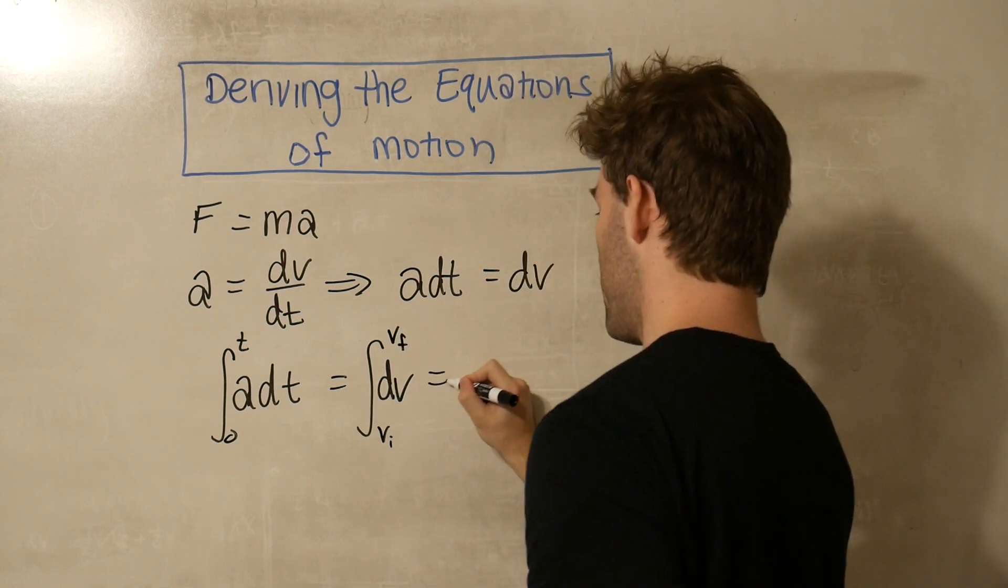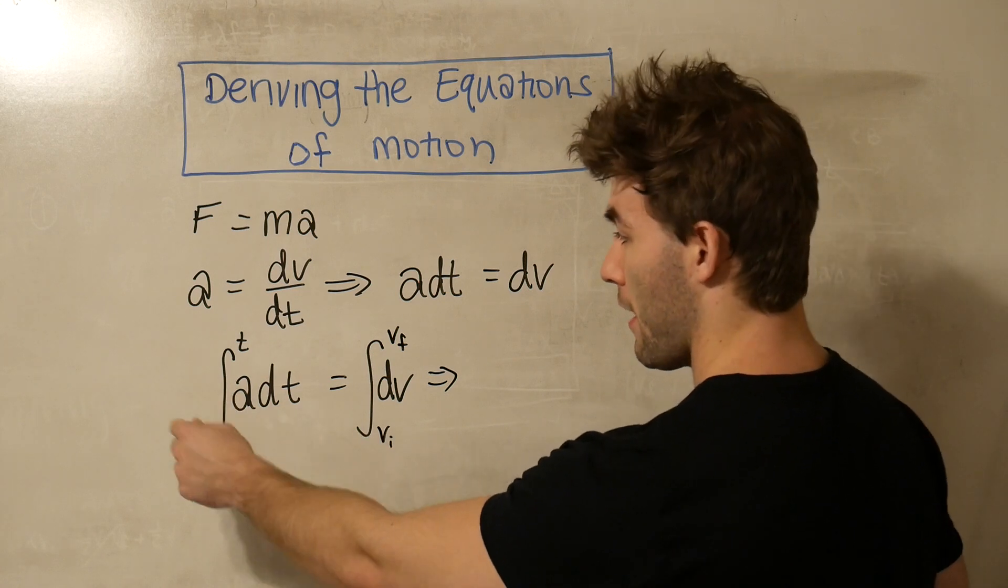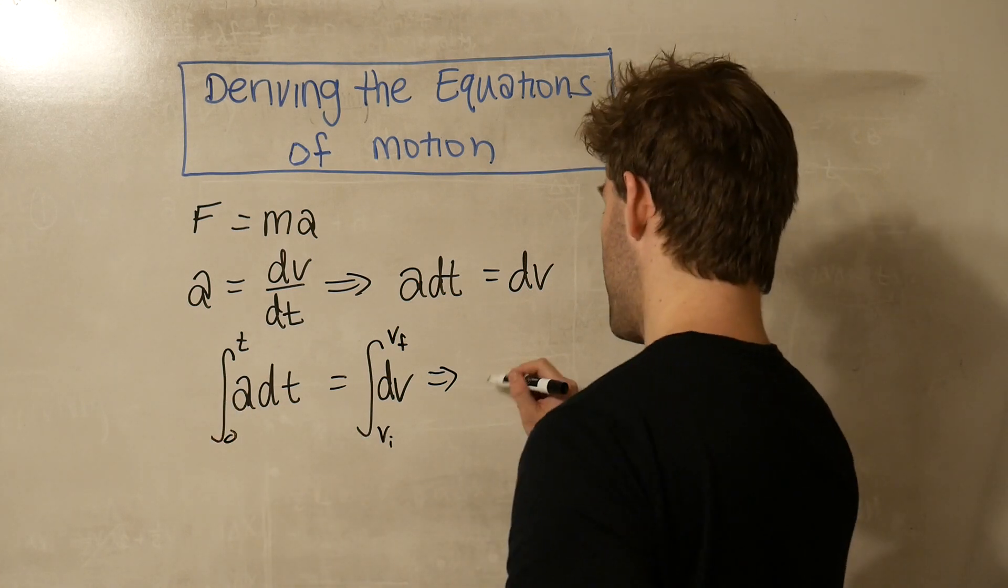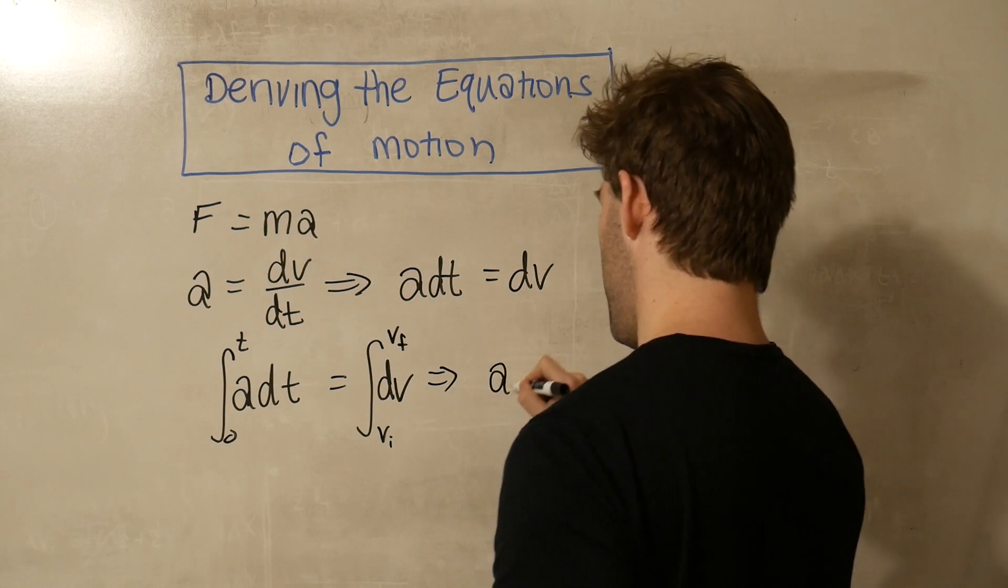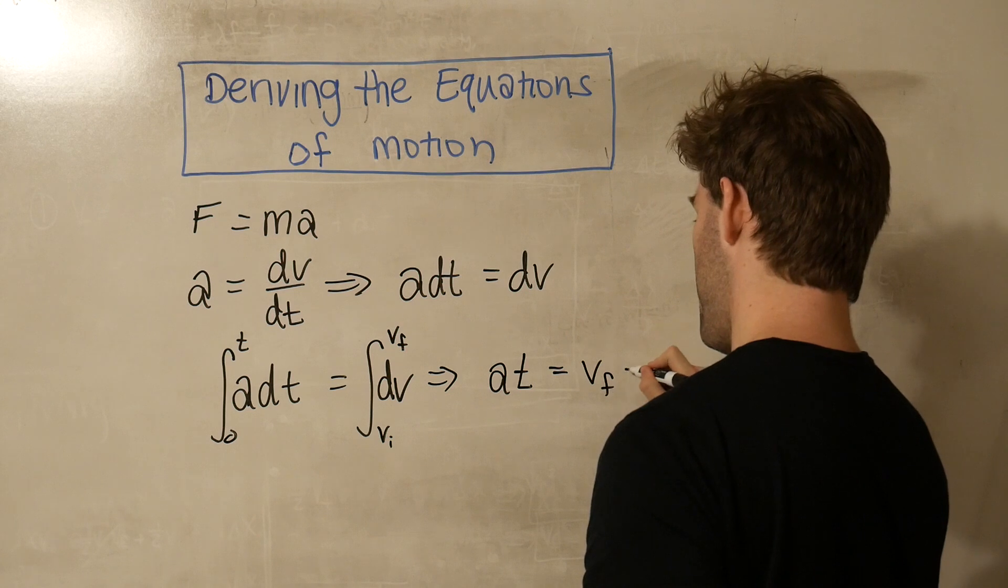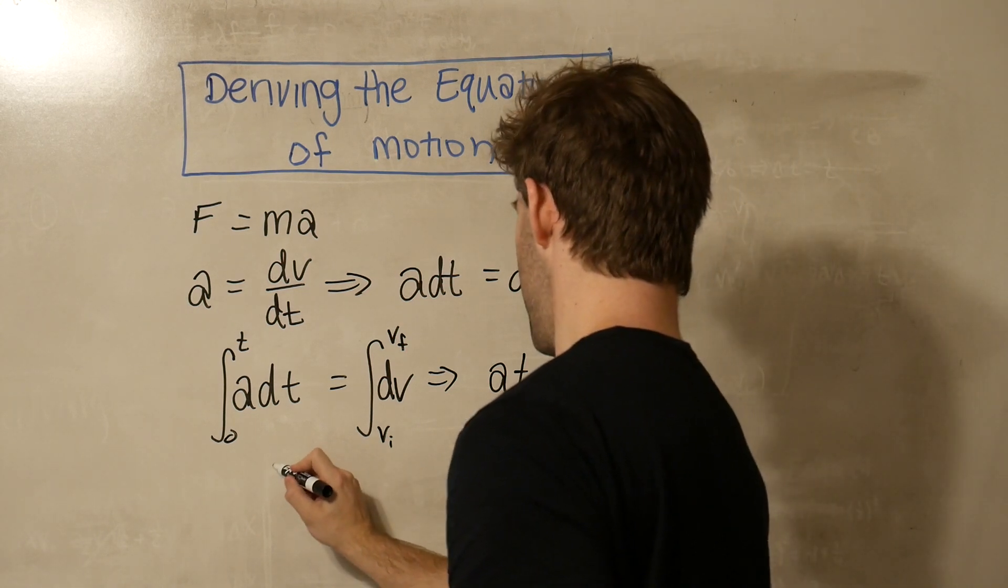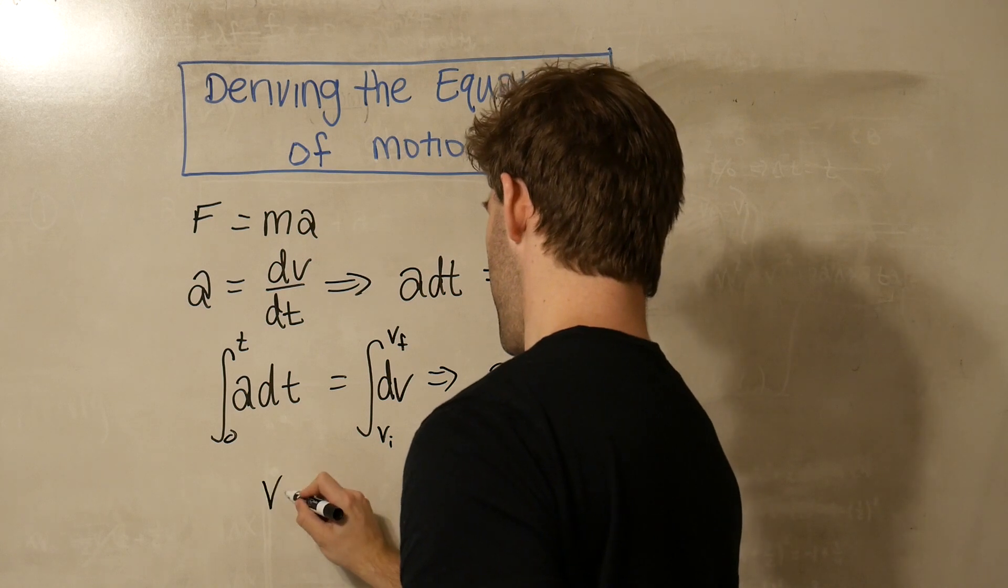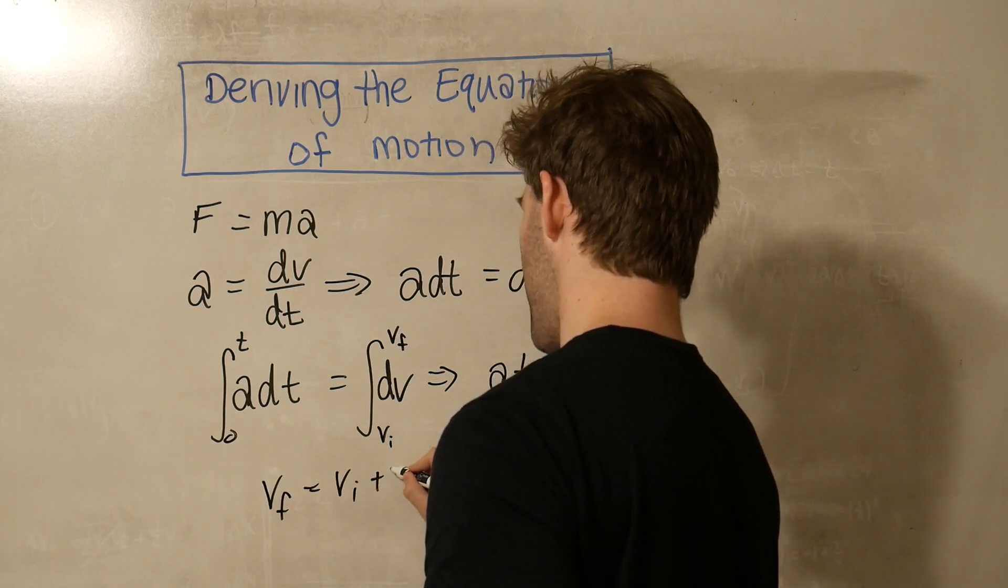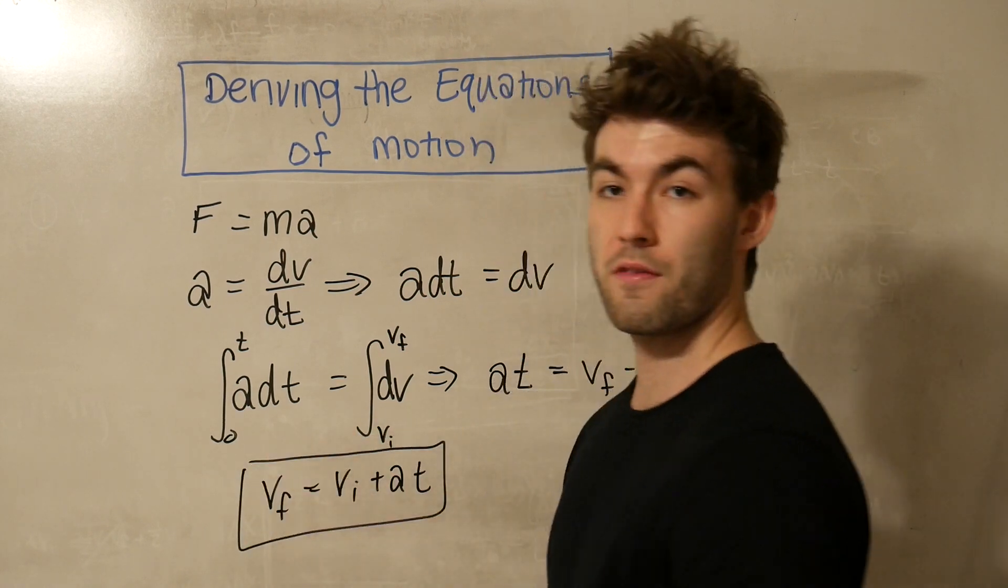So after we carry out this integral, we see that there's no time term already in this, so it's just going to be a t minus zero. So this is going to be at is equal to vf minus vi. Another way that we can write that is vf is equal to vi plus at. And there we have our first equation of motion.